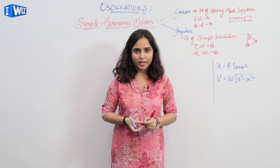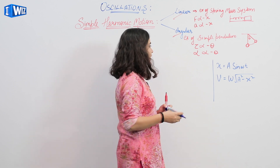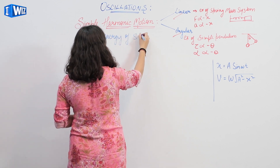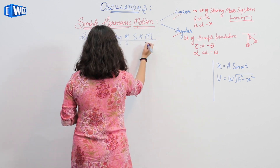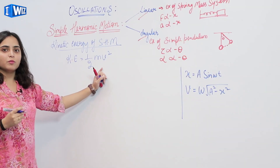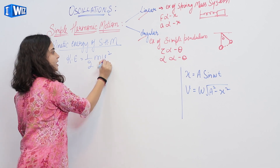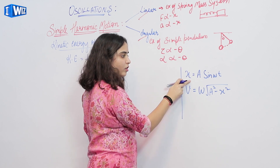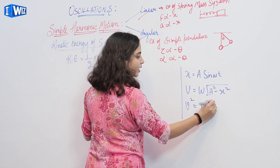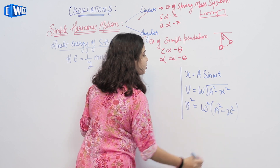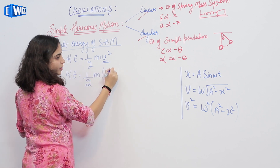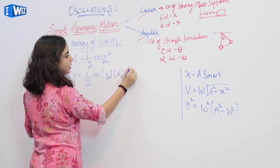After calculating potential energy, we will calculate kinetic energy of simple harmonic motion. We know the formula of kinetic energy is half mv squared. As we are talking in terms of simple harmonic motion, we will substitute the value of velocity. Squaring this velocity, we get omega squared a squared minus x squared. Substituting this value, kinetic energy equals half m omega squared (a squared minus x squared).